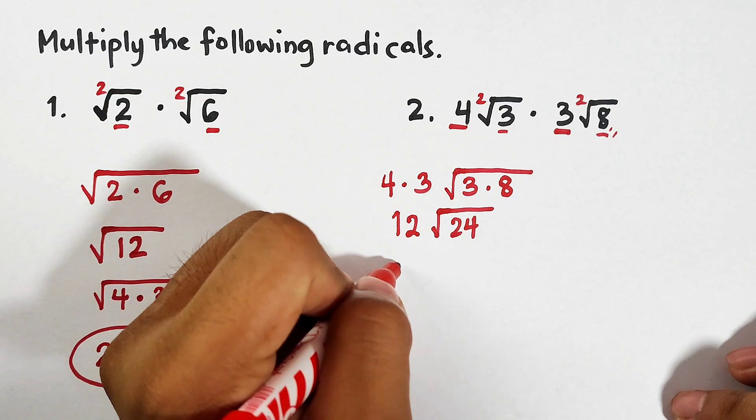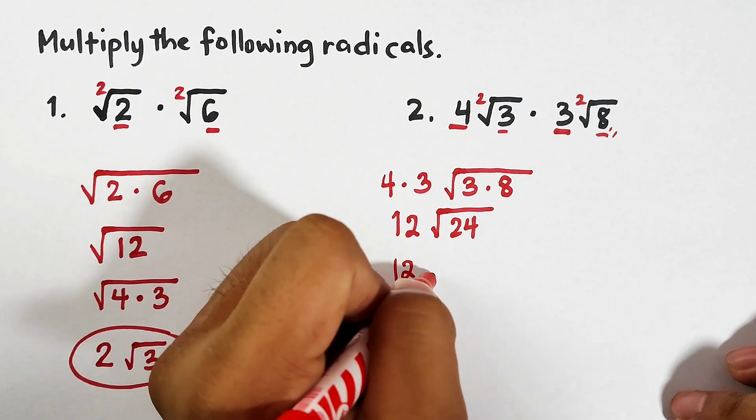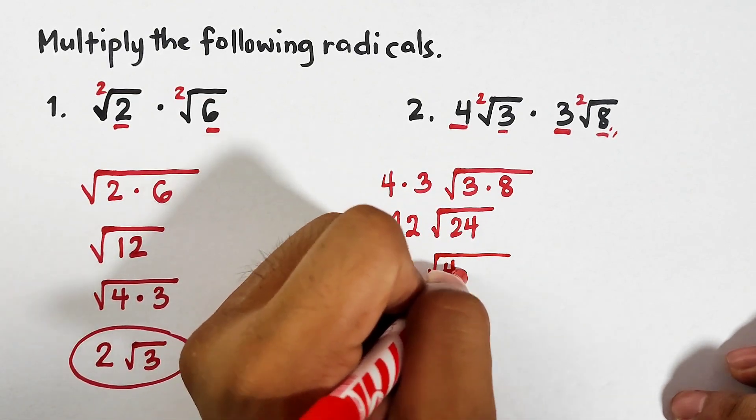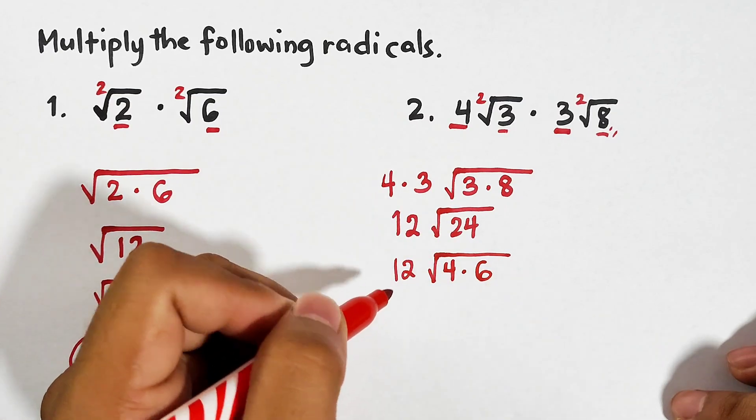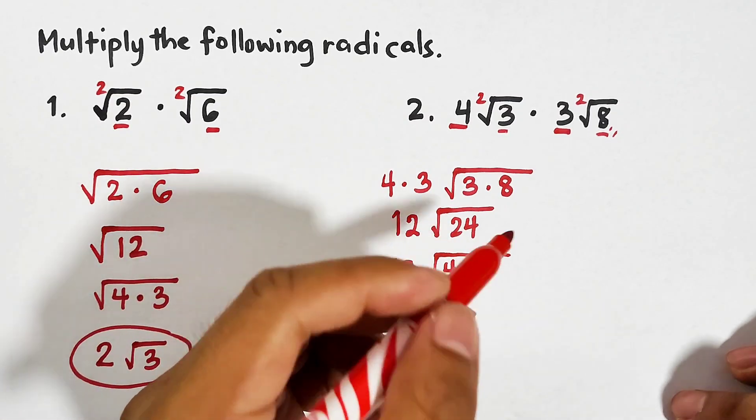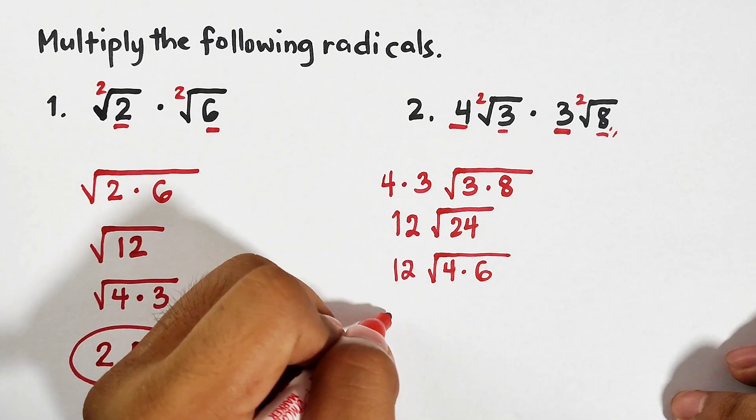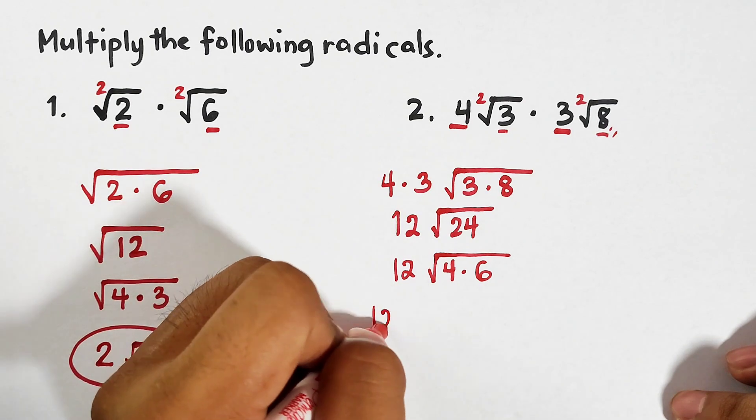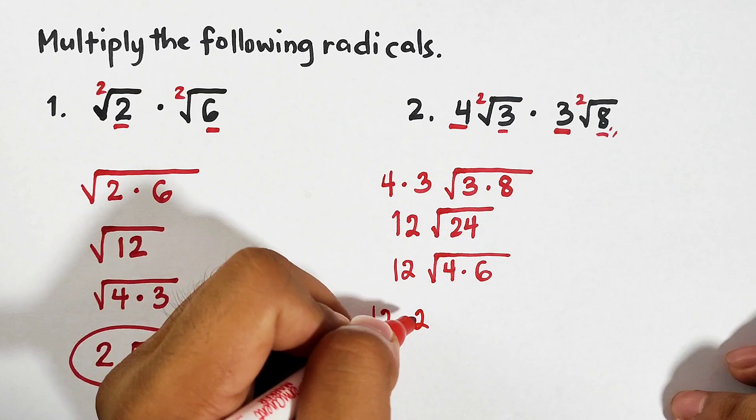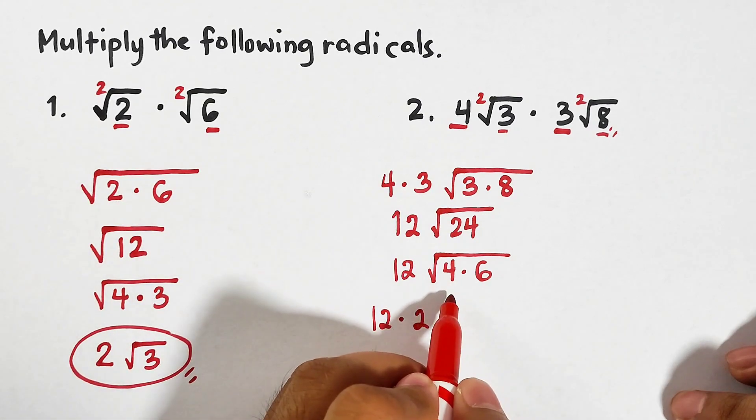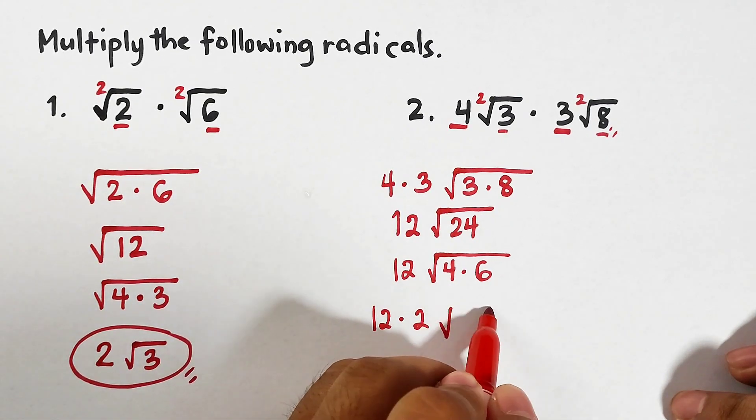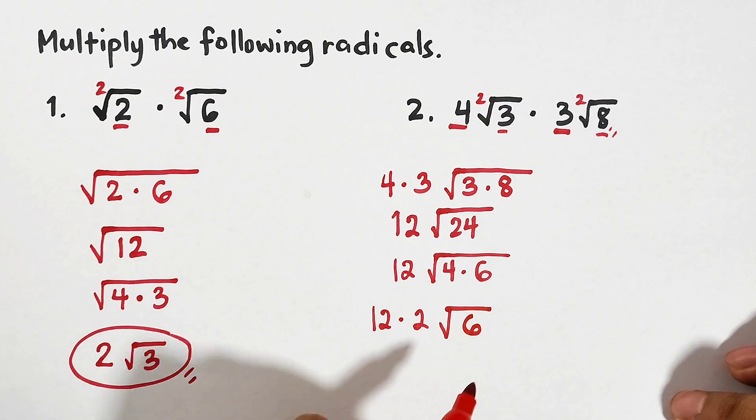Now we all know that we can still simplify 24 by factoring it out. The factors are 4 times 6, so it will become 12 then square root of 4 times 6. And what is the square root of 4? The square root of 4 is definitely 2. We will put that outside. It will become 12 times 2.